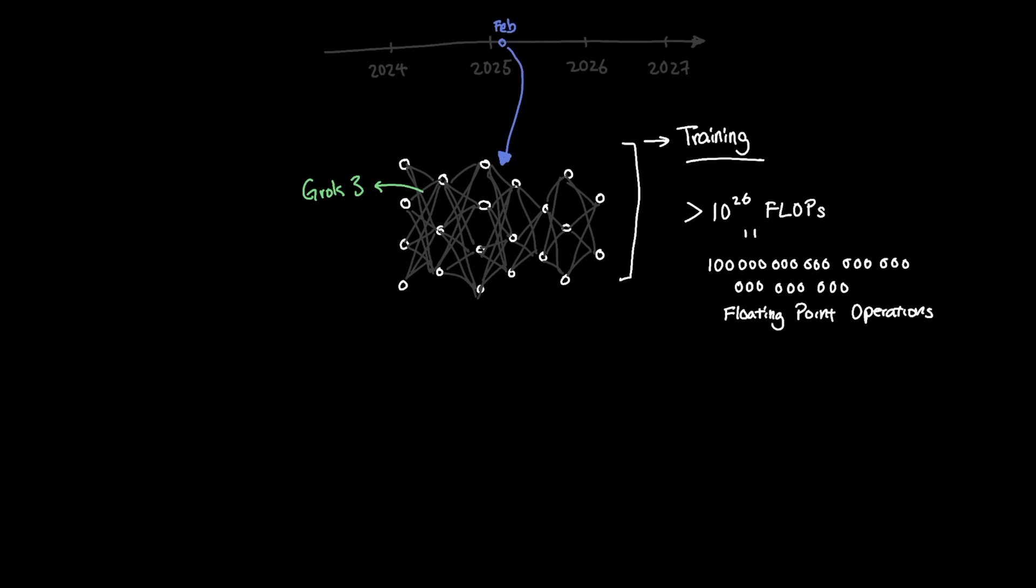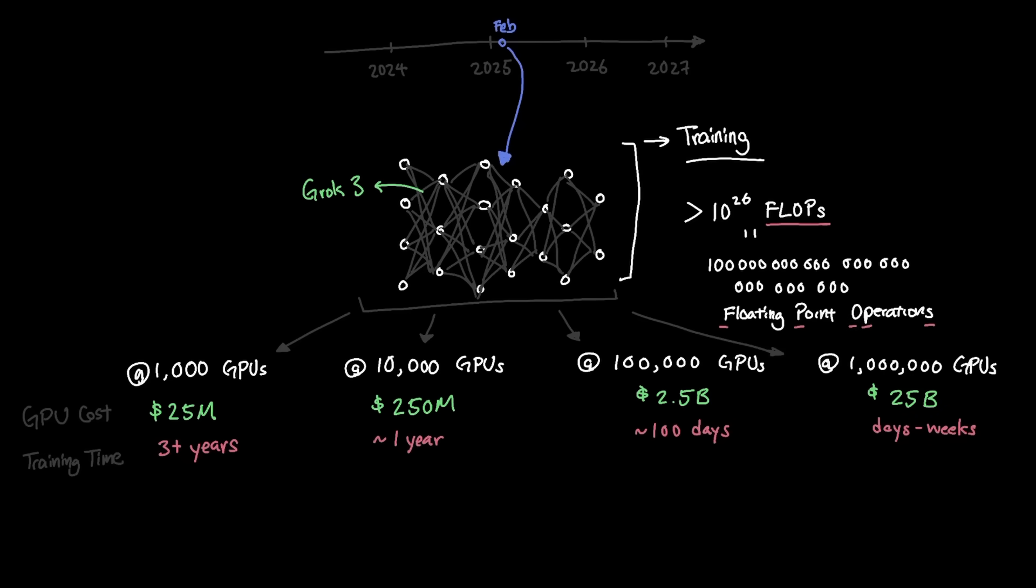Here are four options at varying scales of GPUs. At 1,000 GPUs, you only need to spend about $25 million in GPU expenses, which is somewhat manageable considering the fact that you're trying to build state-of-the-art models. But because Grok 3 requires more than 100 septillion flops, having 1,000 GPUs to train Grok 3 will likely take you more than three years just for pre-training.